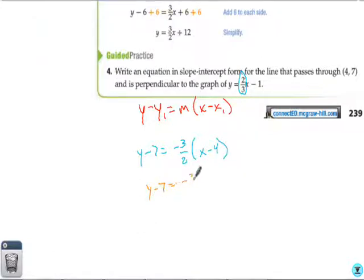Negative 3 over 2 times x minus 4 then two steps from here to the answer. First, distribute y minus 7 equals negative 3 over 2 x plus 6 and then we're going to add 7 to both sides y equals negative 3 over 2 x plus 13. Okay? And that's it.